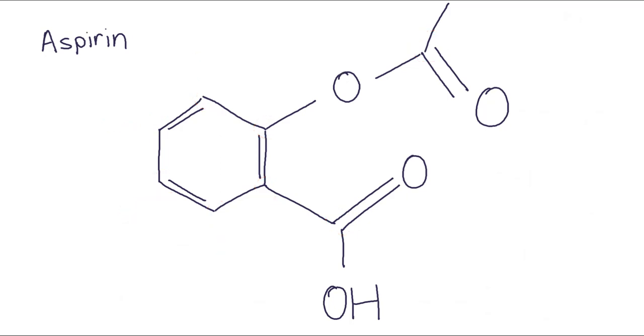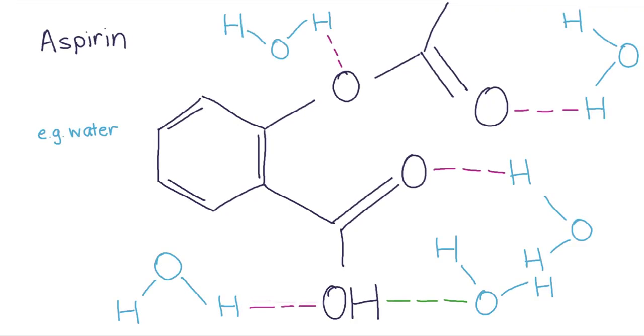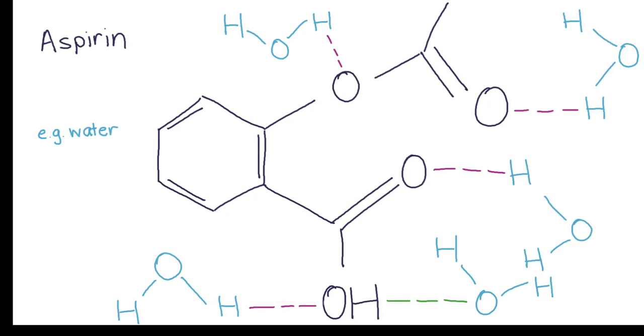Looking at aspirin, where could hydrogen bonding occur? Are there any oxygens, fluorines or nitrogens? Yeah, we've got four oxygens. Are any of those oxygens bonded to a hydrogen? Yep, this one. So all of these locations are potentials for hydrogen bonding. The oxygens could bond to a hydrogen of another aspirin molecule, and the hydrogen could bond to an oxygen on another aspirin molecule. Or they could bond to water molecules.